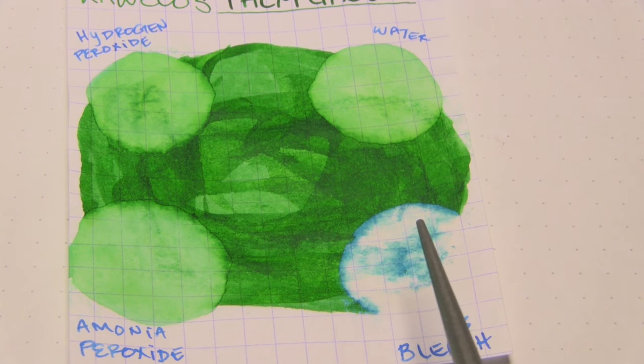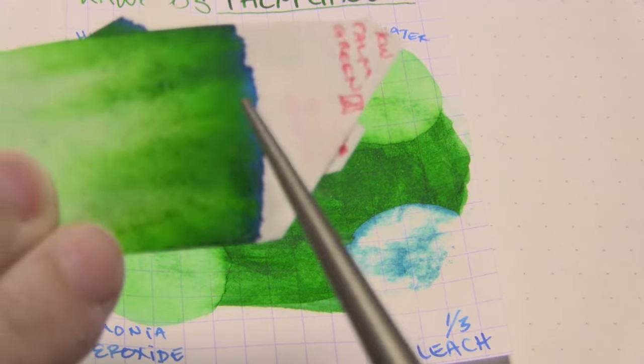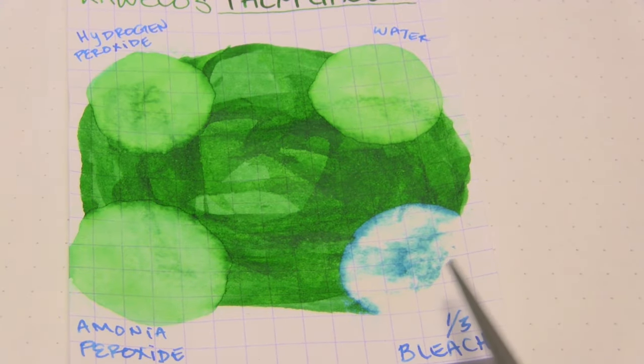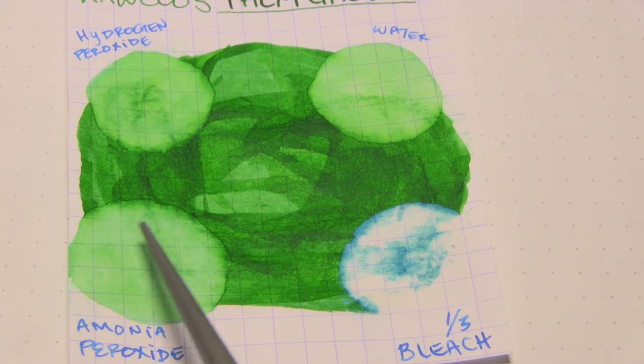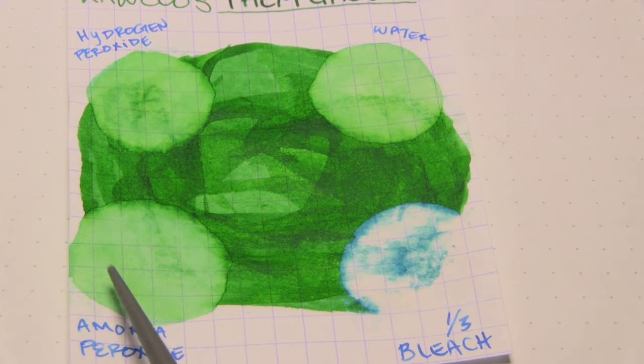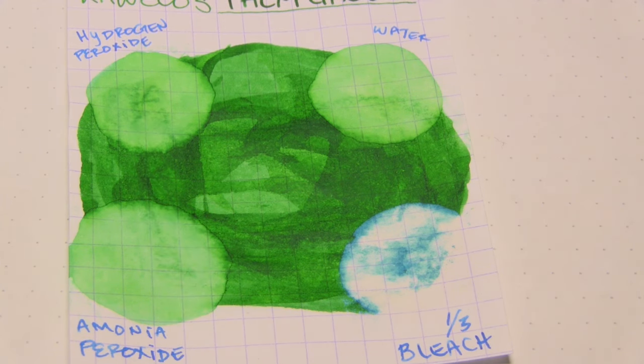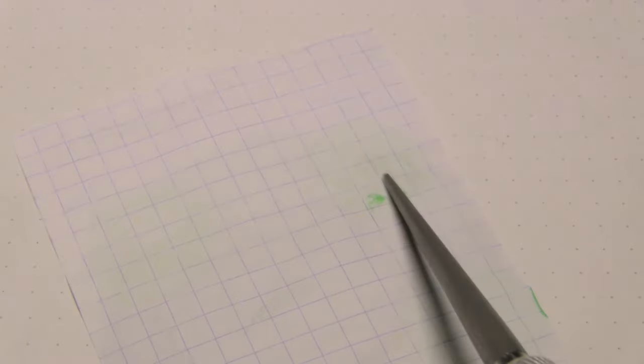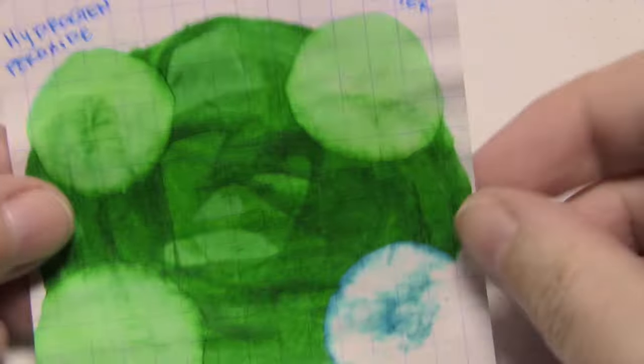One third bleach solution, fascinatingly enough, actually started to bring out that blue color, but did break up most of it. Ammonia pen flush really, really got it moving, but it also affected the page. Hydrogen peroxide also got it moving, but also affected the page. In fact, more than any of the others.